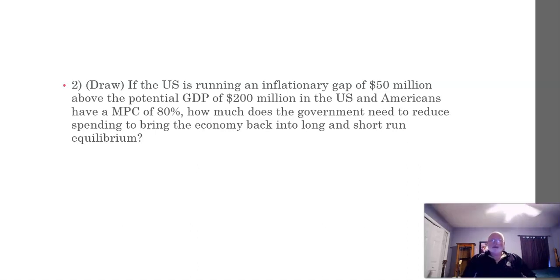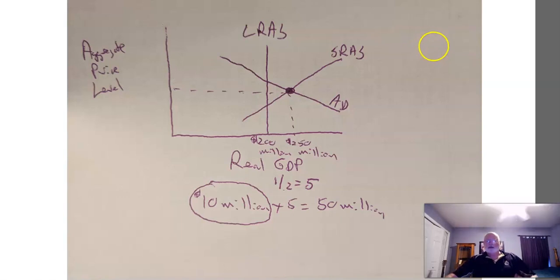So the question is how much does the government need to reduce spending? This is a spending multiplier. The MPC is 80%. What do you need to get the multiplier? You need the MPS. Remember the MPC and the MPS together add up to one. Point eight and point two add up to one, so the MPS is 20% or 0.2. The multiplier is one over that, so one divided by 0.2 equals five. We need to reduce real GDP by $50 million, and whatever amount of money that cuts spending is going to wind up multiplying times five. So what number times five equals $50 million? It should be $10 million.